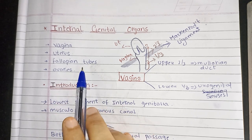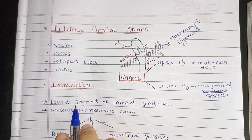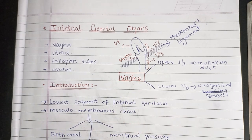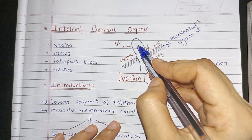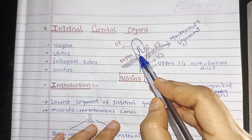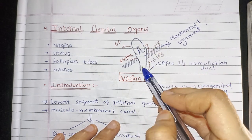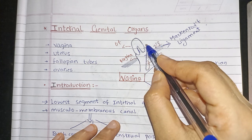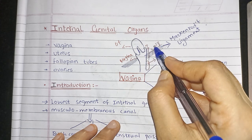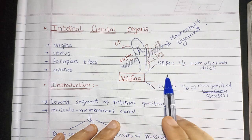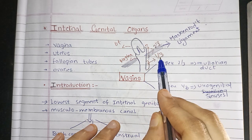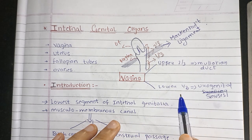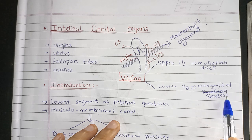We will begin first with vagina. Before coming to its introductory part, let's see how vagina is developed. This is the uterus, this is cervix, and this one is vagina. The upper two-third part of vagina is derived from the Mullerian duct and the lower one-third part of the vagina is derived from the urogenital sinuses.